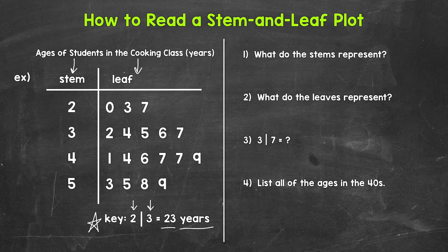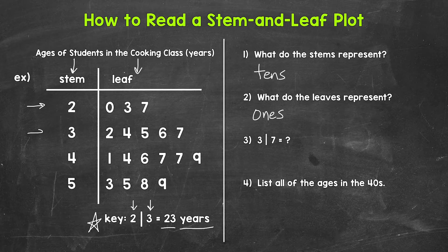For number one, what do the stems represent? The tens place, the tens digit. And what do the leaves represent? The ones place, the ones digit. Looking at the stems, we have two, three, four, and five. So we have the twenties, the thirties, the forties, and the fifties.